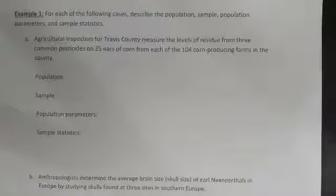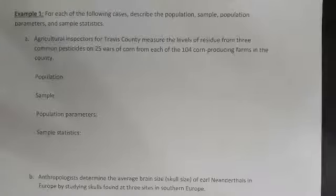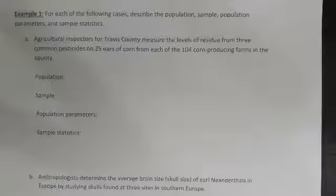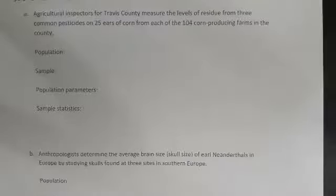For each of the following cases, describe the population, sample, population parameter, and sample statistic. Agriculture inspectors for Travis County measure the levels of residue from three common pesticides on 25 ears of corn from each of the 104 corn-producing farms in the county.